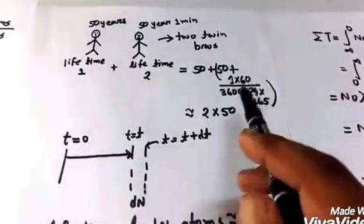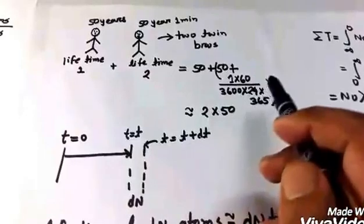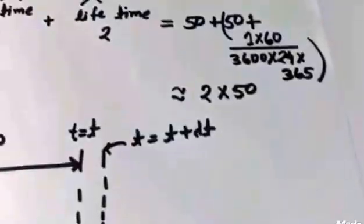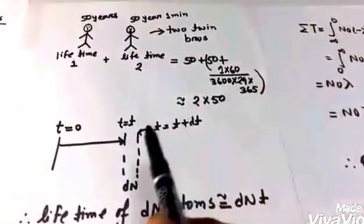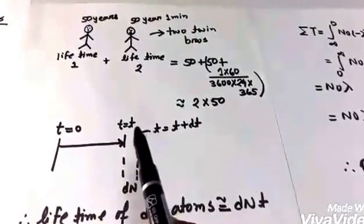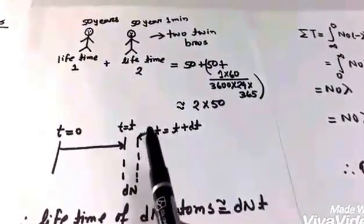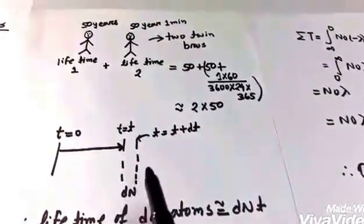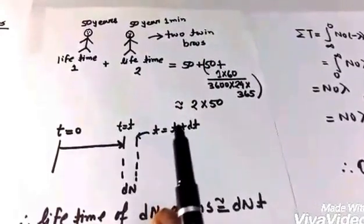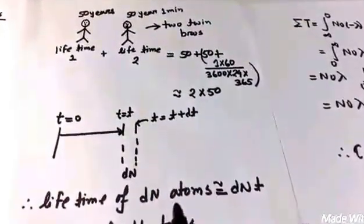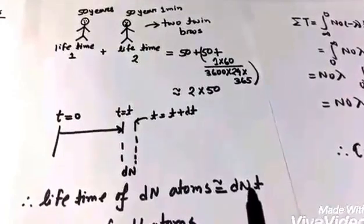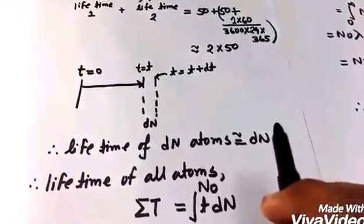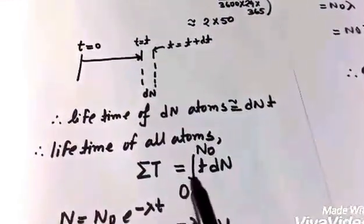We can use this idea here for our radioactive material. From the differential formula we see that in the interval of time t and dt—I want t and t plus dt—if dn amount of atoms are decayed, the lifetime of the dn atoms will be dn into t. As dt is small compared to t, the lifetime of all the atoms will be found if we integrate this quantity from zero to N₀ for the total number of atoms.